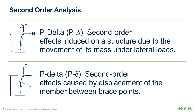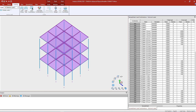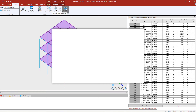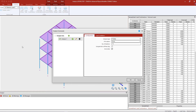We are now ready to move on to the third and final step of our workflow: specifying the direct analysis procedure. Automatically, whenever you specify the direct analysis command, the program will consider both P-large delta and P-small delta effects. P-large delta includes second order effects induced on a structure due to the movement of its mass under lateral loads, while P-small delta considers second order effects caused by displacement of members between bracing points. Let's select the loading tab and click on the analysis commands option.